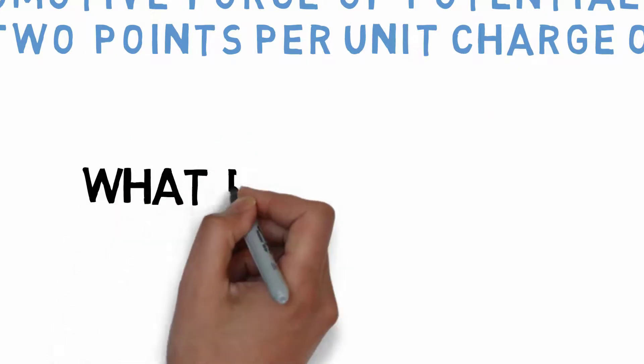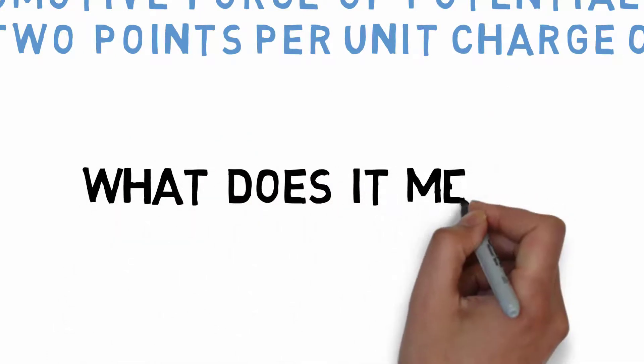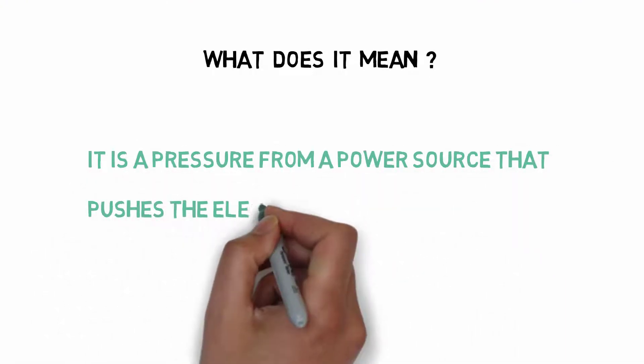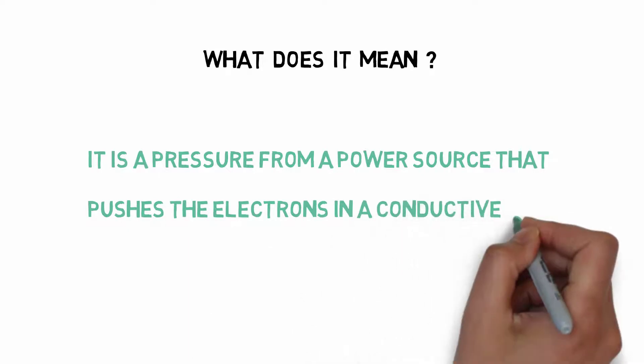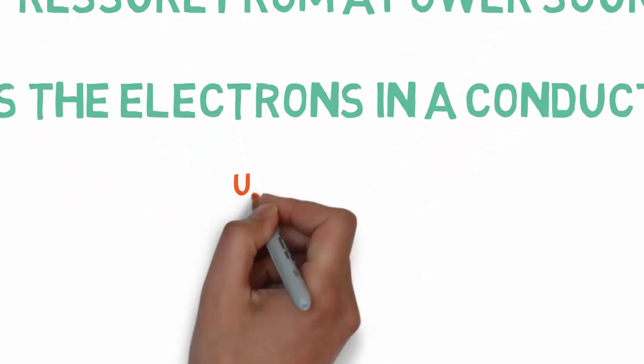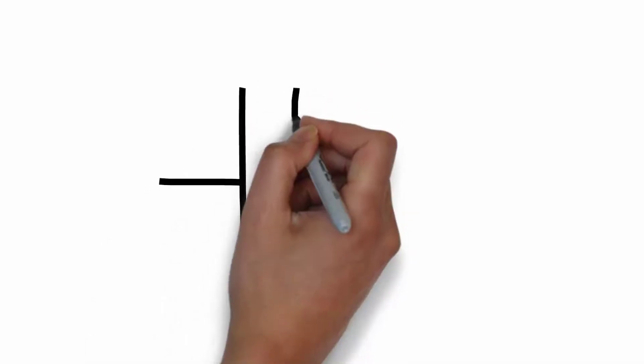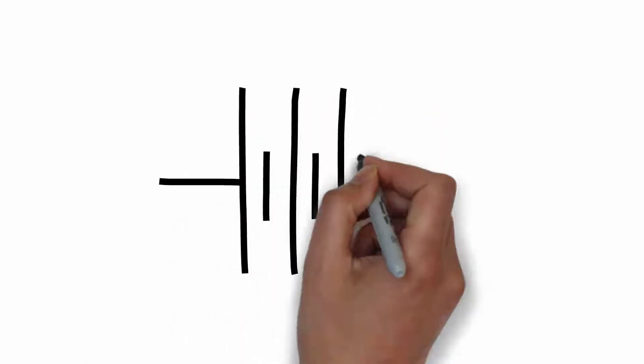What does it mean? It is a pressure from a power source that pushes the electrons in a current. The unit of voltage is volts. Consider a battery of 5 volts for example.